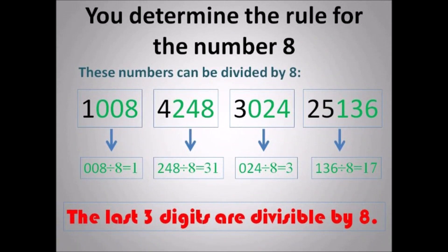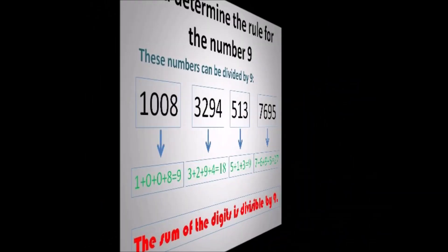Okay, going on to number 8. The last 3 digits must be divisible by 8. That's why I had them in green. For example, 008 is divisible by 8, 048 is divisible by 8, 024 is divisible by 8, and 136 is divisible by 8. So the last 3 digits must be divisible by 8.